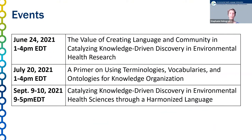I want to set the stage for how today's event fits in with several upcoming virtual events. Our primary event is the two-day workshop to be held in September. In order to spend less time on presentations and really focus on intense discussions about the collaborative, we've decided to host two pre-workshop events. Today's event provides context for why we are embarking on this community-driven harmonized language initiative. The July workshop will offer an introductory session on knowledge organization systems — vocabularies, terminologies, and especially ontologies — helping people learn how and when to use them, where to find them, and how best to apply them.